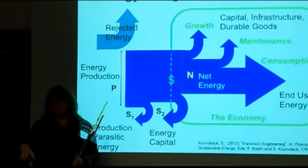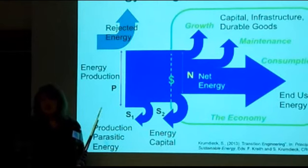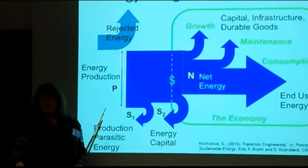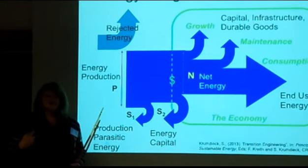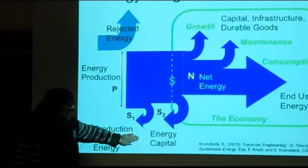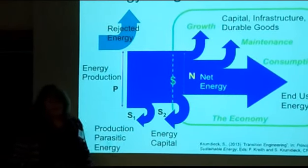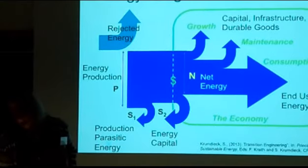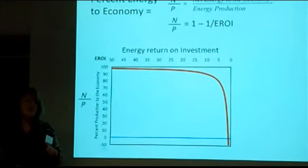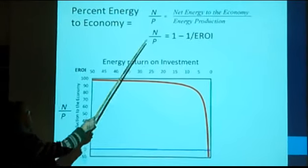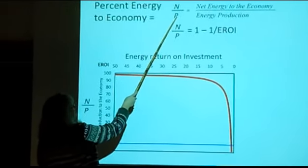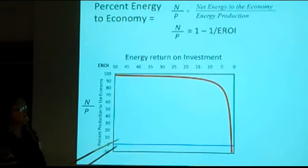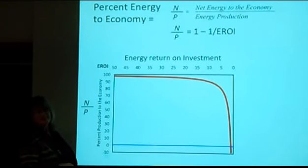Consumer energy consists of things that could have been sold to somebody else but the energy industry had to buy — like fuel for diesel trucks to move water for fracking. If they took oil out of their tank and put it back in their own tank, it wouldn't be there. We want to look at the mathematics: the ratio of net energy to the economy versus what we produced is a function of EROI.